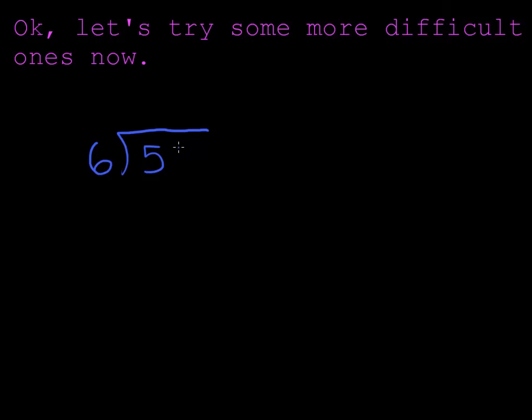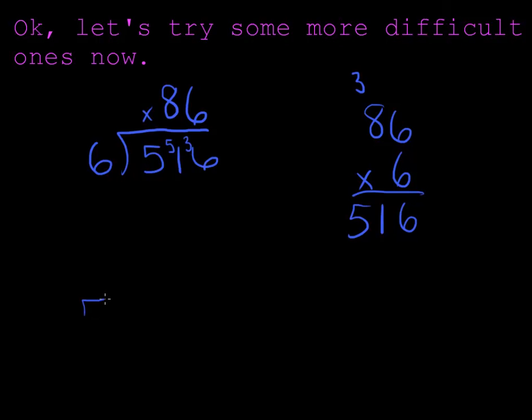So we're going to try some more difficult problems. These problems are harder because we're dividing by larger numbers. Let's do 6 into 516. 6 doesn't go into 5, that 5 is left over. 6 goes into 51, it goes in 8 times, that's 48 with 3 left over. And the last number we have to divide is 36. 6 goes into 36 six times. I'm just going to check my answer, and when I multiply 86 times 6, I see that I get the number that I started with, 516. You can see that was definitely some more mental math.